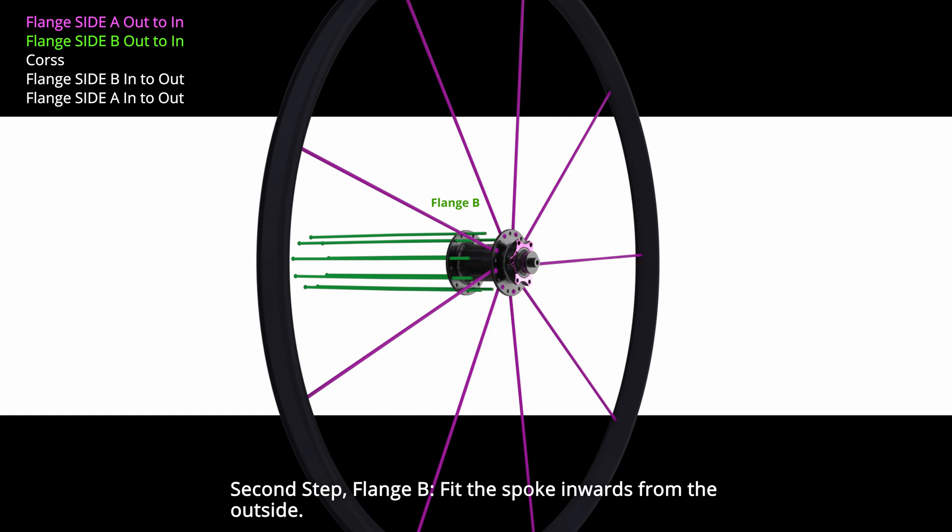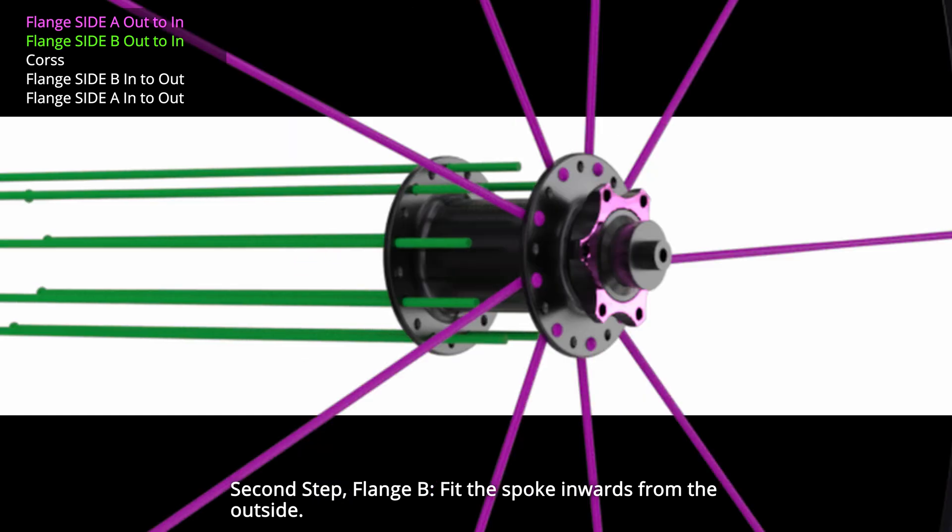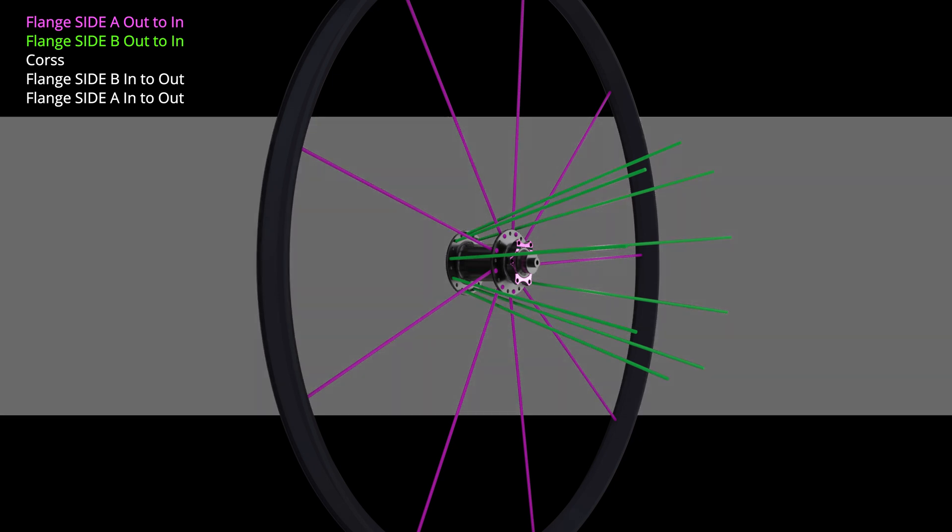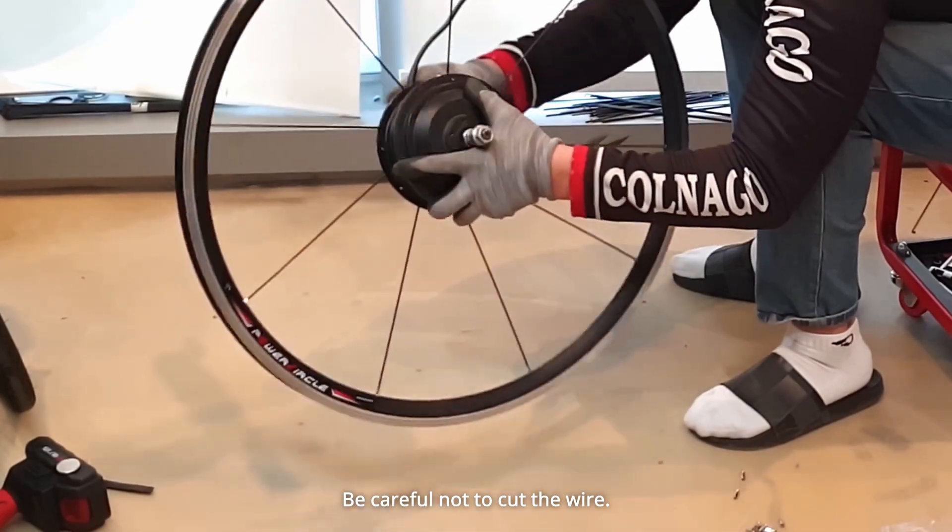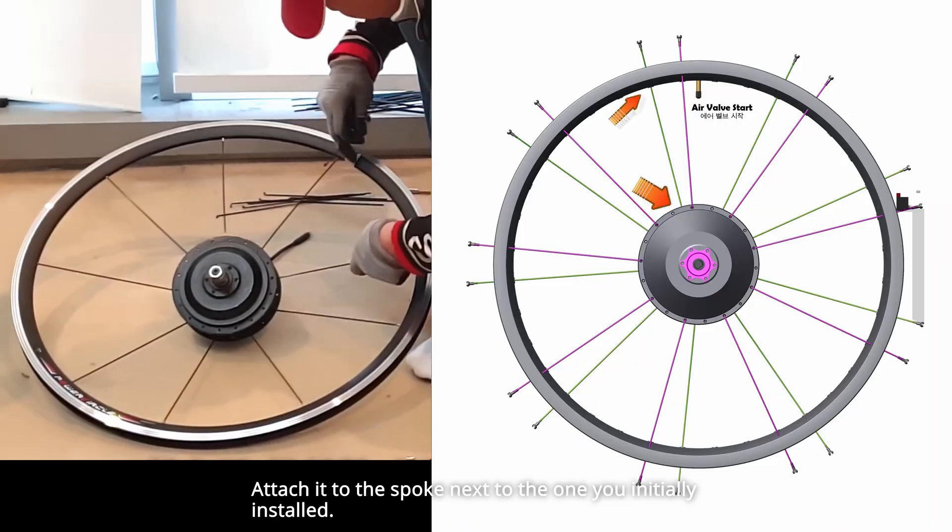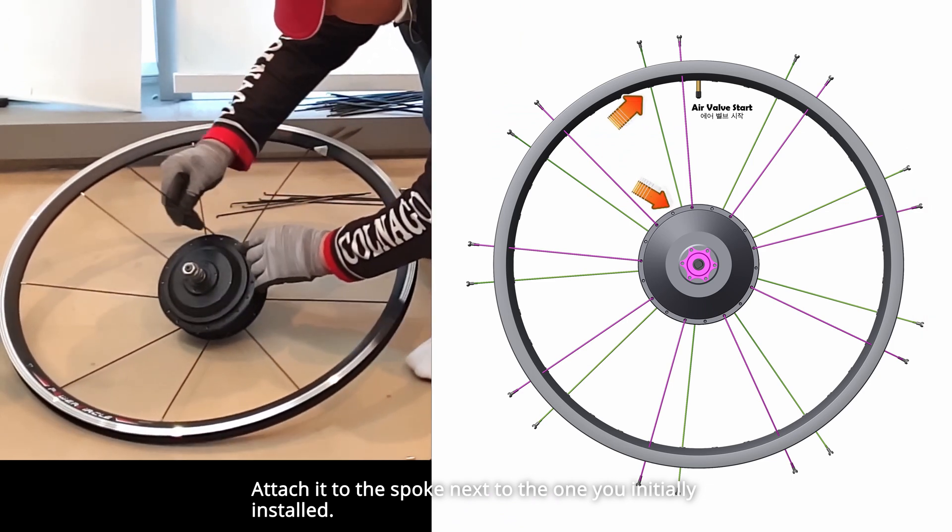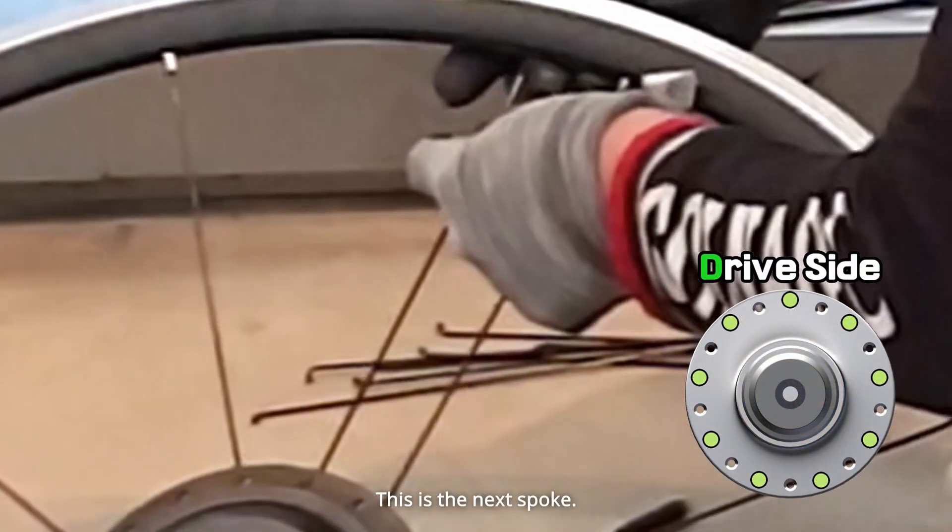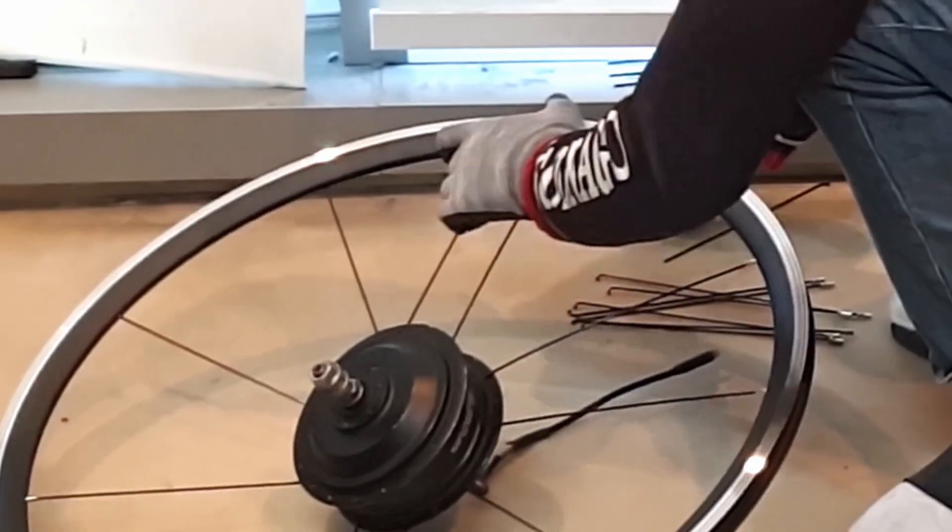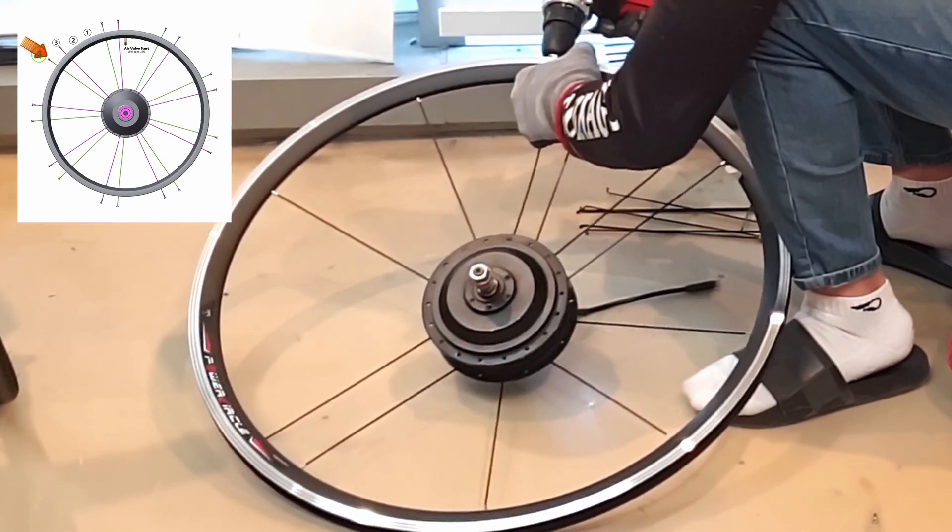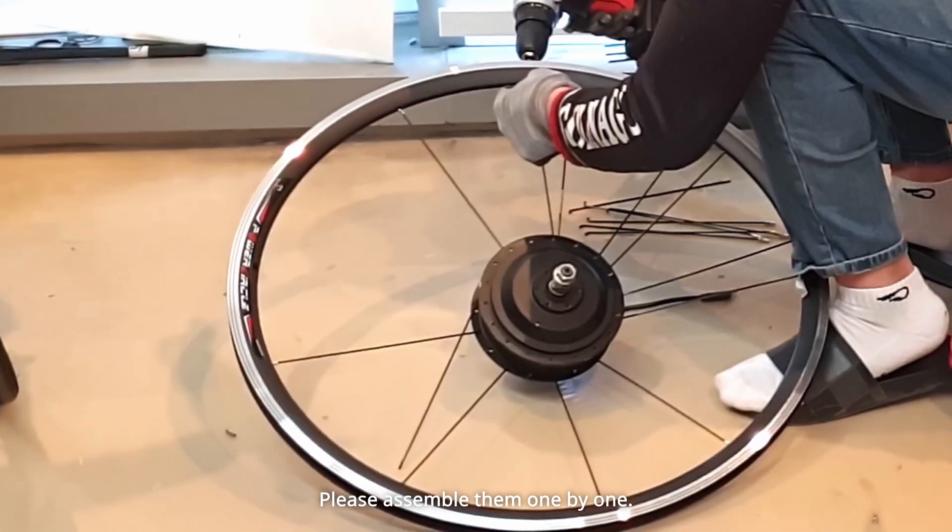Second step flange B. Fit the spoke inwards from the outside. Be careful not to cut the wire. Attach it to the spoke next to the one you initially installed. Install it like this. Is this the next spoke? This is the next spoke. Please assemble them one by one.